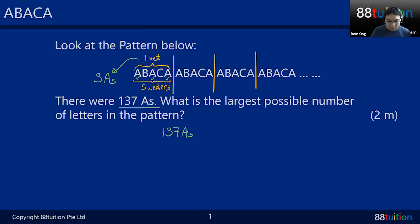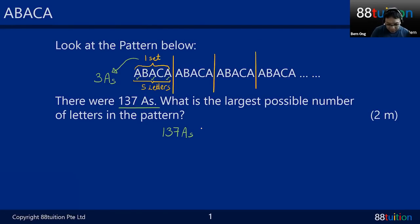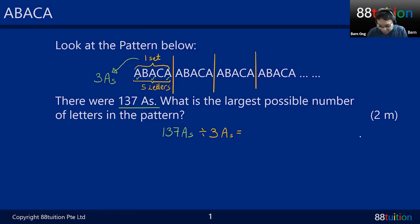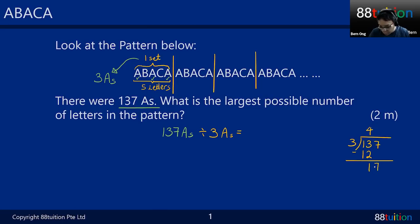137 A's will be spread across many abaca sets. Since there are three A's per set, we can find the number of sets by dividing 137 by 3. This is a Paper 1 question, so no calculator allowed — use long division. With long division you can see the remainder clearly, whereas a calculator gives you decimals and causes confusion. The remainder is two.